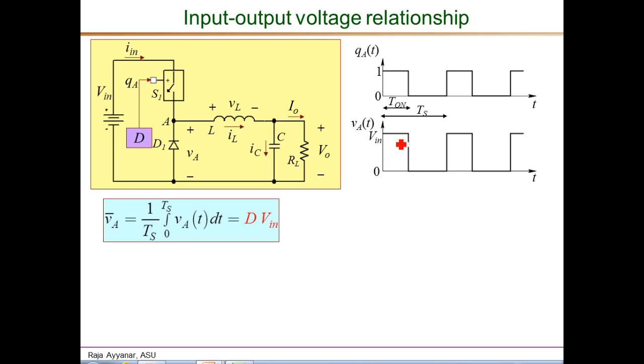So the area of this waveform is nothing but V_IN times DT_s. This interval is called the DT_s interval, and the remaining portion within one period is 1 minus D times T_s. Since V_A is 0 during this 1 minus DT_s period, the area is simply V_IN times DT_s. Therefore, the average value is V_IN DT_s divided by T_s, which is simply D times V_IN. So V_A bar is duty ratio times the input voltage from this waveform.